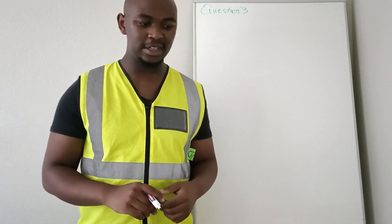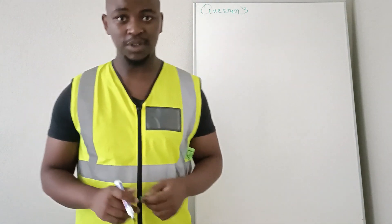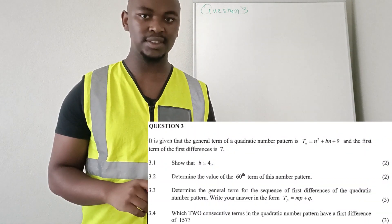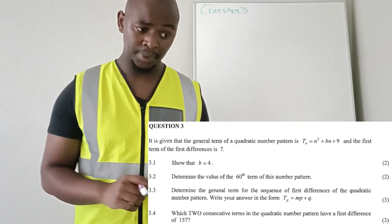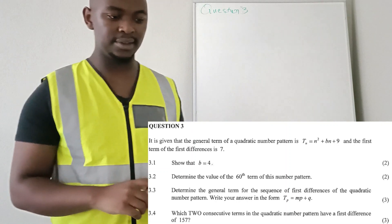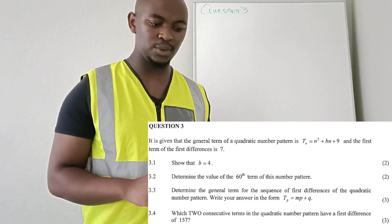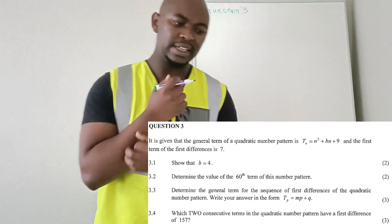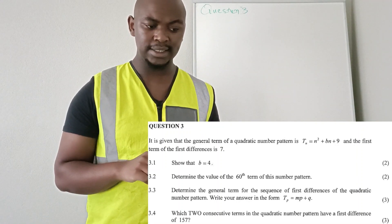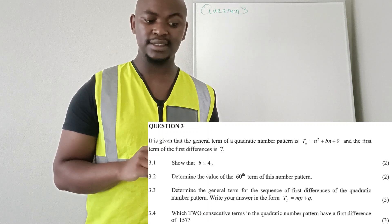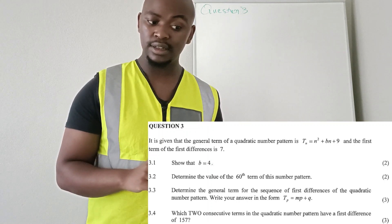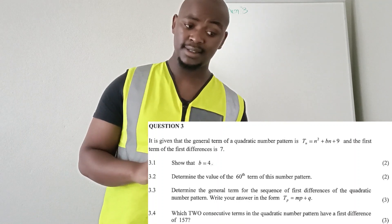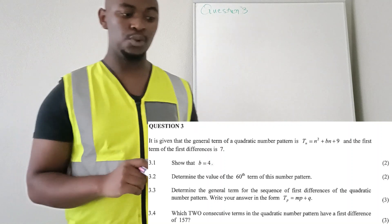Hello everyone, welcome again. Today we are going to have a look at the Creator of November 2022 mathematics question paper one, and we are going to focus on question number three. It is given that the general term of a quadratic number pattern is Tn = n² + pn + 9, and the first term of the first difference is seven.